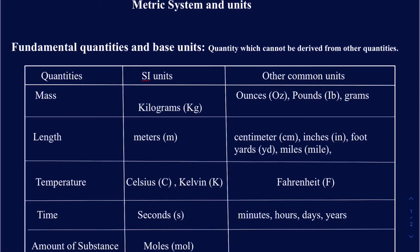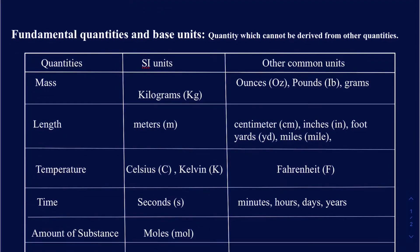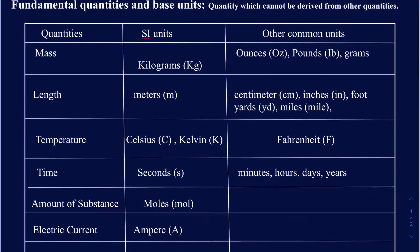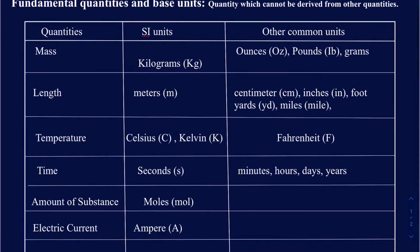There are actually seven fundamental quantities that you have to worry about, and you don't really use all seven of them all the time. In a chemistry course, about six of them get used a lot. The seventh one is more of a physics quantity.